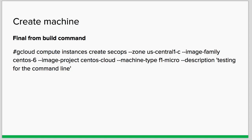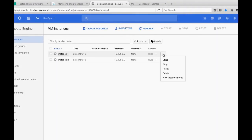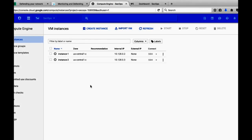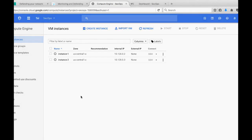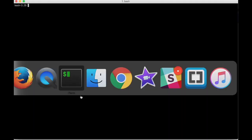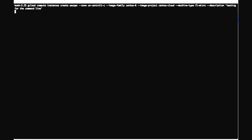Now let's create the machine. The final command is: gcloud compute instances create, where the instance name will be 'psychops', zone will be us-central1-c, image-family will be centos-6, image-project will be centos-cloud, machine-type will be f1-micro, and the description is 'testing for the command line'. There are already two instances existing — let's hit the command and see the output. It will take some time to generate the machine.